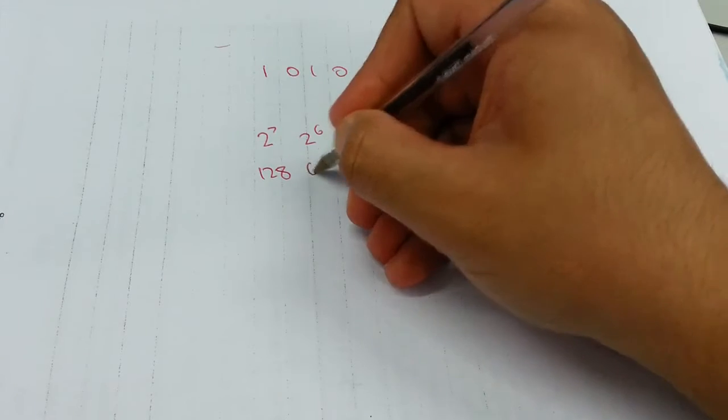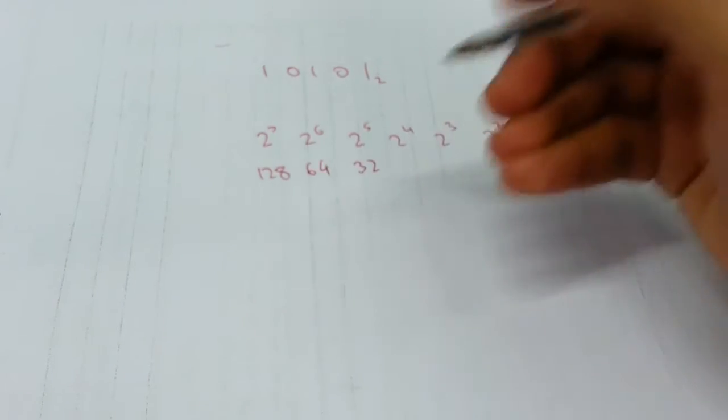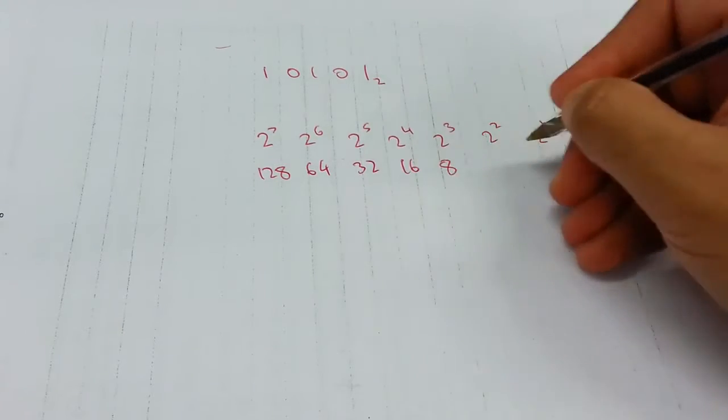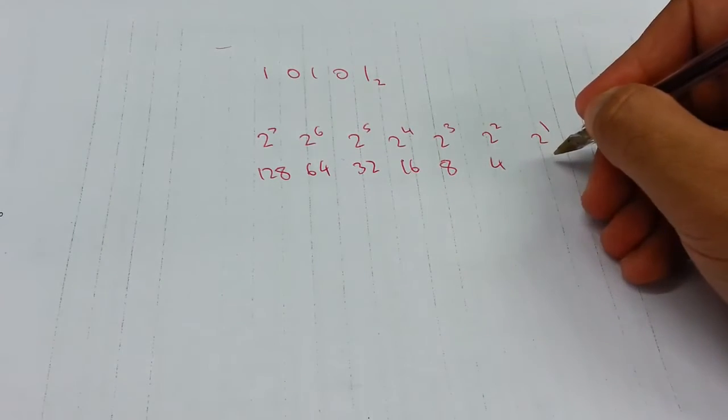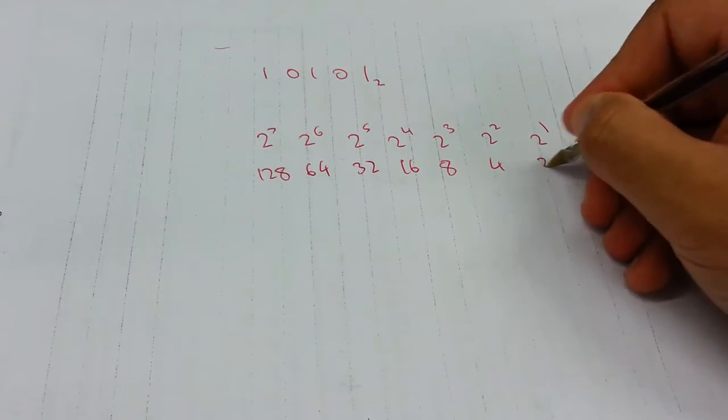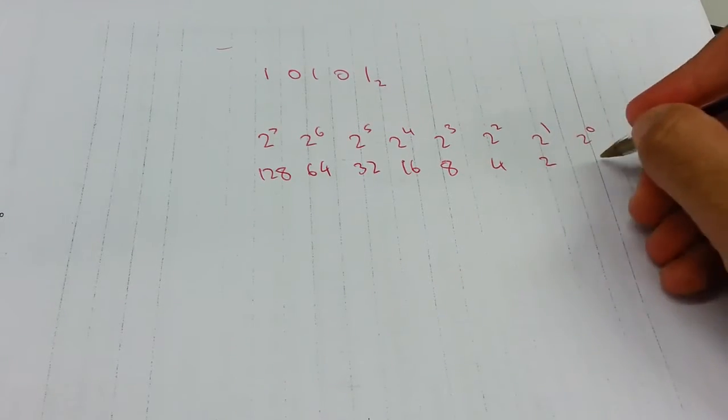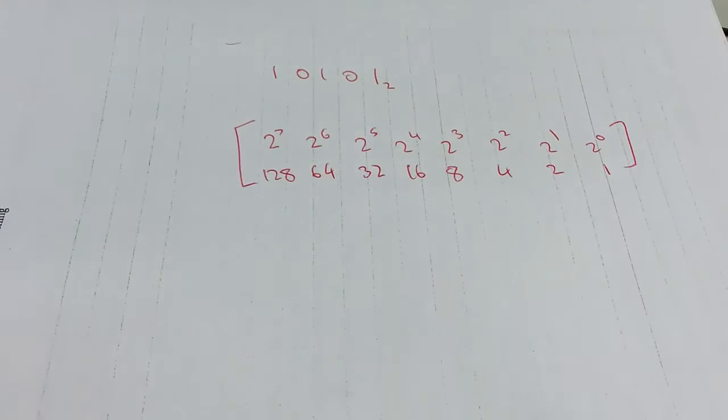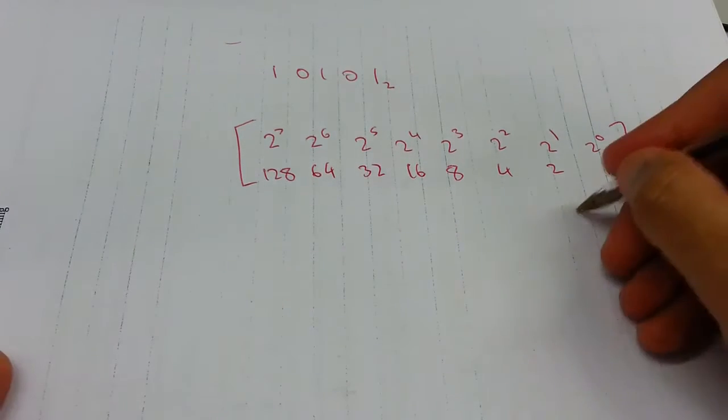This is 128, 64, 32, just keeps getting half by itself, 16, 8, 4, 2, and 2 to the power of 0 is 1. This is from right to left here.